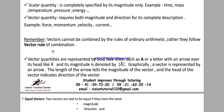Magnitude is the absolute value of a vector. The absolute value is the magnitude. A vector is graphically represented — the vector R is graphically represented. The vector has both a magnitude and a direction.